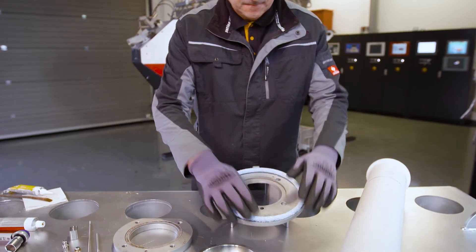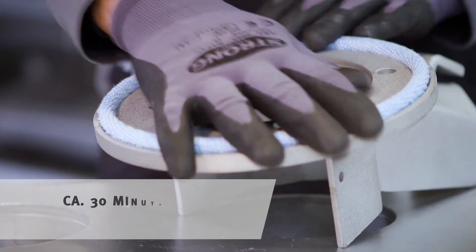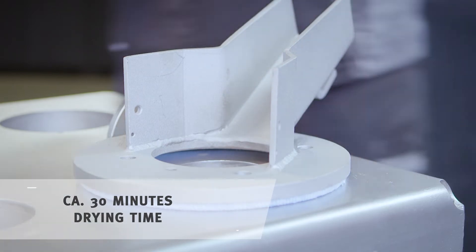Next, you adhere the seal to the riser tube's steel insert. Weigh down the seal and let it dry.